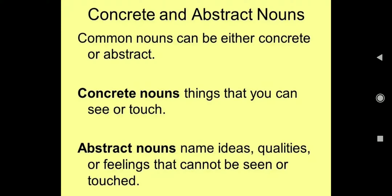Next is concrete and abstract noun. Jo hamaré common noun hote hain, that can be either concrete or abstract — wo dono hi ho sakte hain. So aap kaise identify karenge ki yeh concrete noun hai ya abstract noun? Agar hum concrete nouns ki baat karein — these are things that you can see or touch. Yeh wo naming words honge jinhe aap dekh sakte hain, jinhe aap touch kar sakte hain — yeh aapke concrete noun kahlaayenge. When we are talking about abstract noun — abstract noun names ideas, qualities or feelings that cannot be seen or touched. Yeh wo ideas, feelings or qualities honge jinko dekha nahi ja sakta, touch nahi kiya ja sakta, sirf feel kiya ja sakta hai.